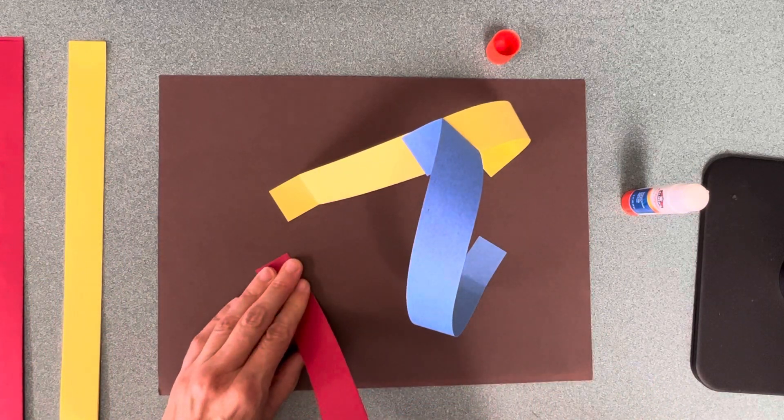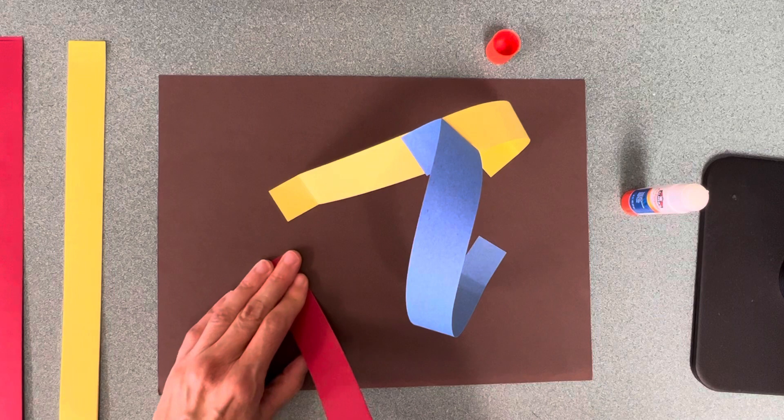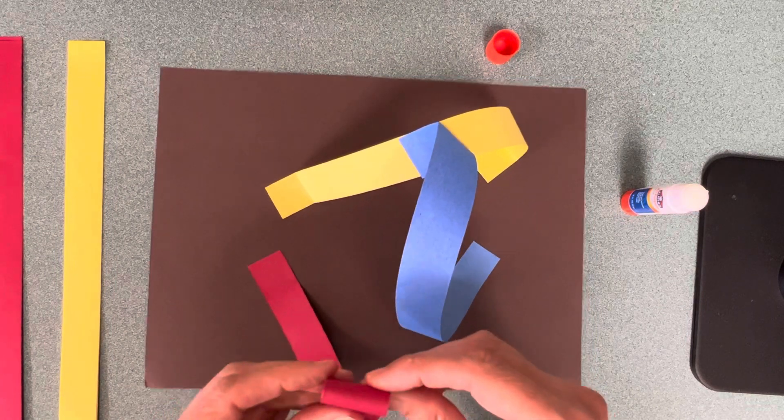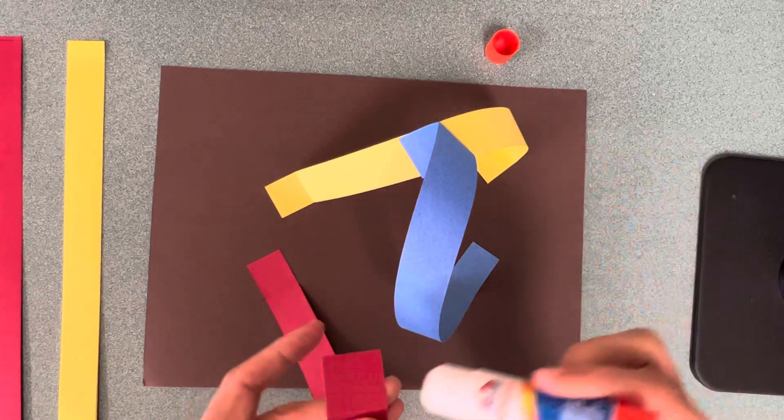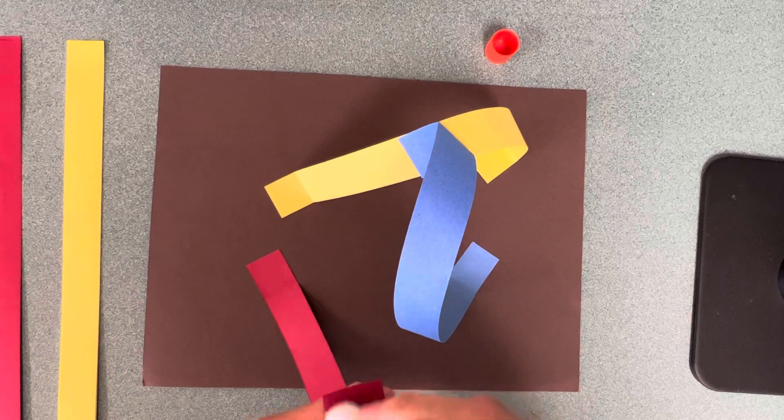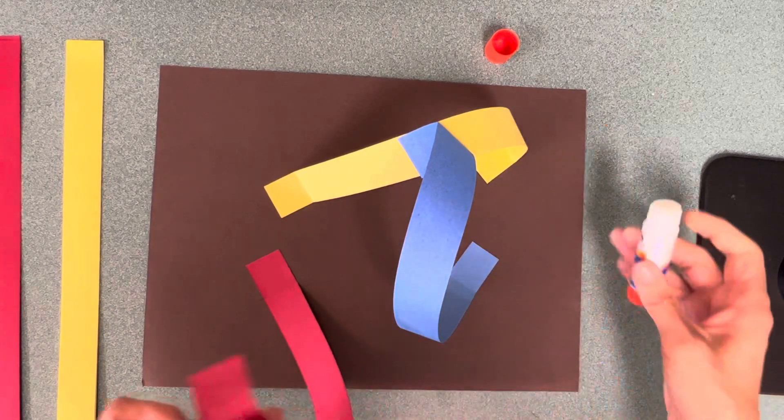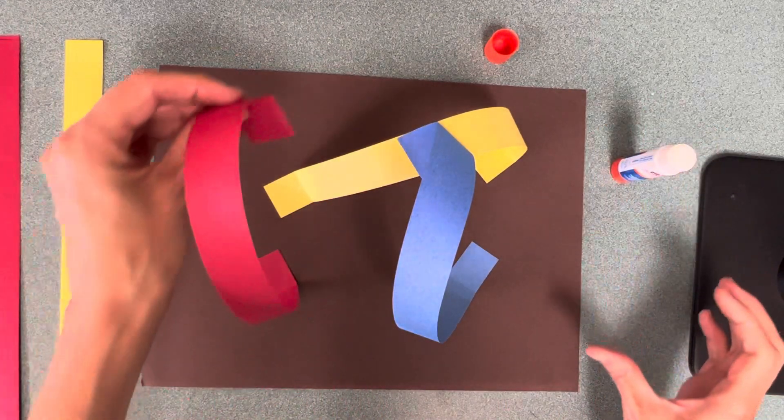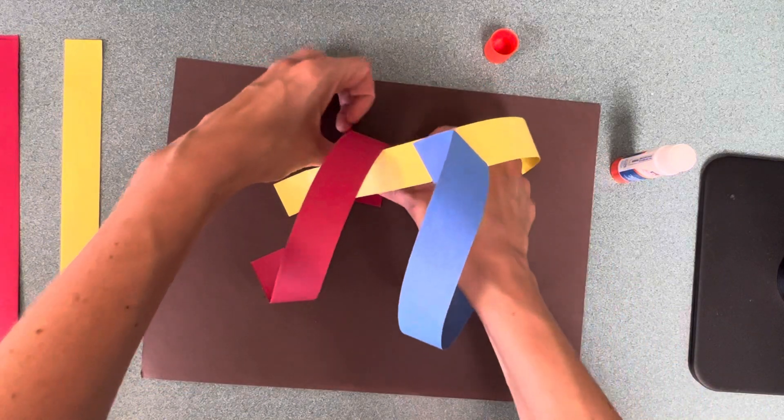1, 2, 3, 4, 5, 6, 7, 8, 9, 10. I'm going to fold and pinch another foot. Put glue just on the foot. And stick it anywhere on my paper.